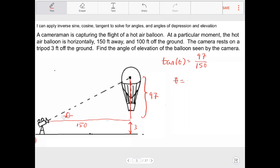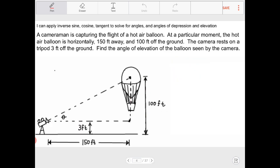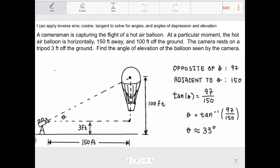So therefore, I can say tangent of theta is equal to 97 over 150. Or theta is equal to arctangent of 97 over 150. And if I were to figure this out, I'll end up with theta equaling 33 degrees approximately.